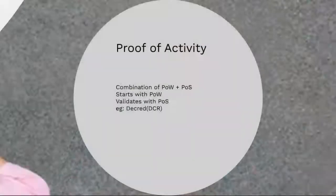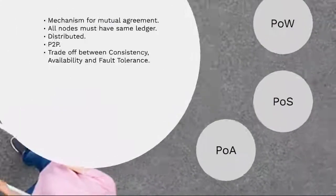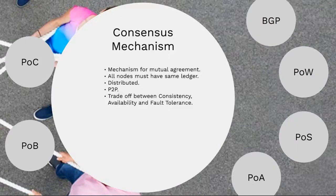This is how proof of activity works. It uses the advantages of both proof of work and proof of stake and reduces the amount of energy consumption, as proof of work is used only in creating a block. Only the header and the winning mining address are passed to the network, which is validated by validators using proof of stake. An example of proof of activity is Decred (DCR).